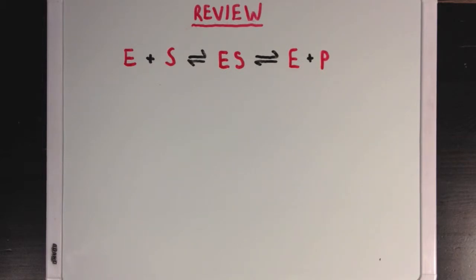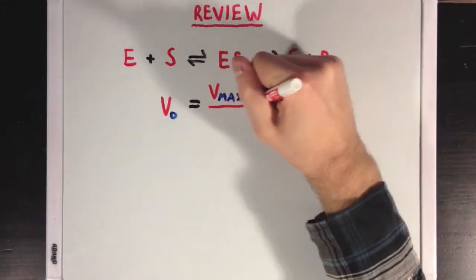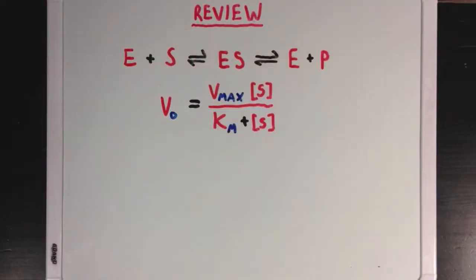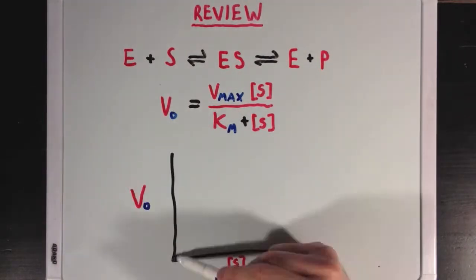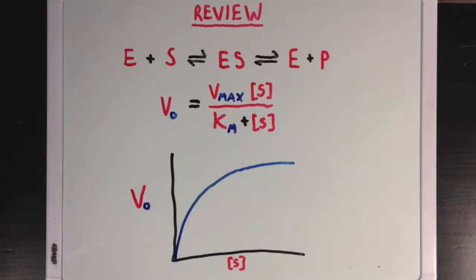First, the binding of substrate to enzyme, and second, the formation of product. Using this idea, we can derive the Michaelis-Menten equation, which is very useful for quantitatively looking at enzyme kinetics. Also remember that as you increase substrate concentration, the speed of product formation will level off at its maximum value, as shown on this graph.